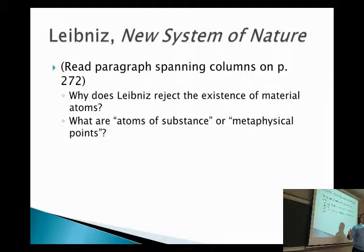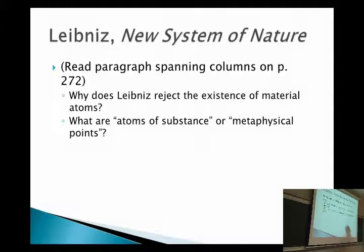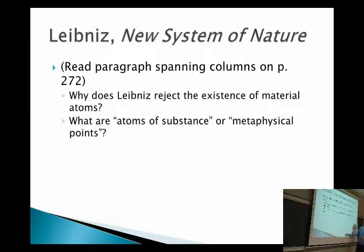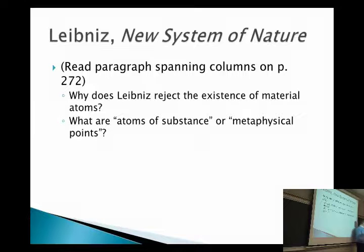Material things can always be divided in some way. No matter how big it is, you can always ask what's half of that. So Leibniz said whatever is the most fundamental constituent of the universe — the most basic kind of thing that exists, that has no simpler parts — would have to have no extension. It would have to be immaterial. That's what he calls atoms of substance or metaphysical points, and the name he ultimately gives these things is monads.